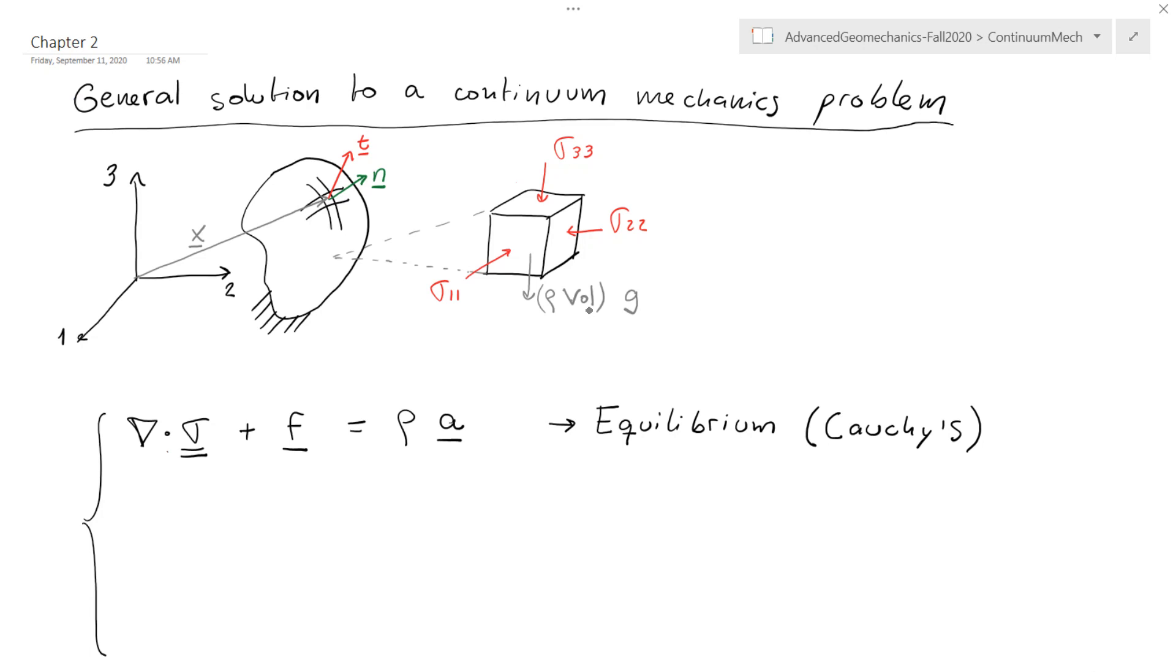We have seen already what this equilibrium equation looks like; this is a compact form in vectorial notation. Let's see the second equation that we're going to need. This is what is called the kinematic equation, and the kinematic equation is going to relate the strain tensor, denoted with variable epsilon, to displacements denoted with U.